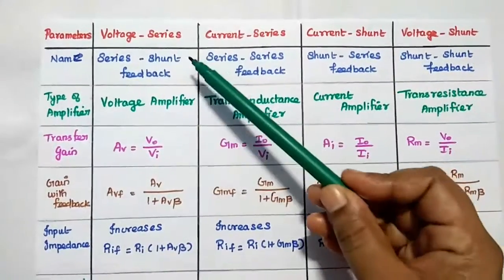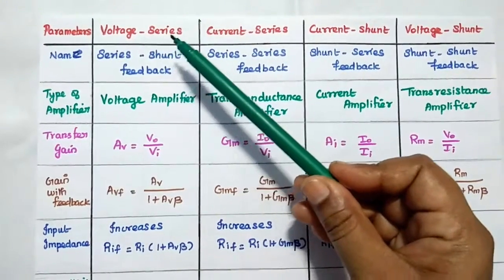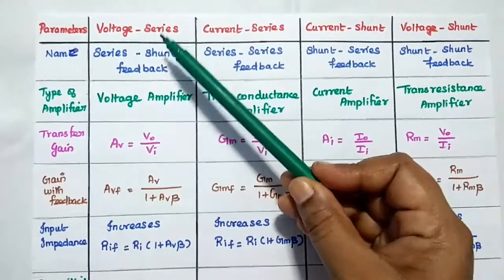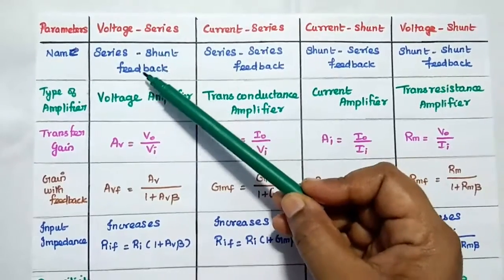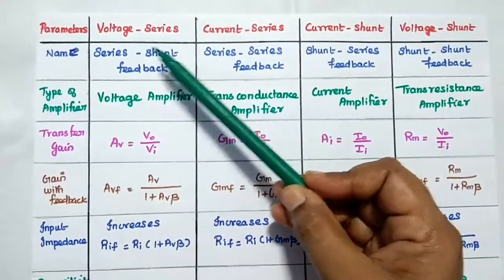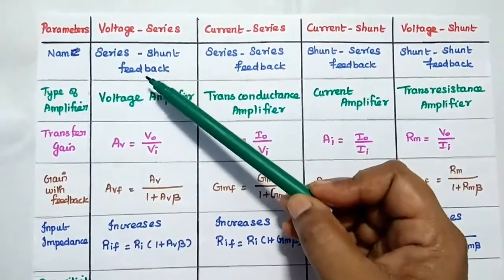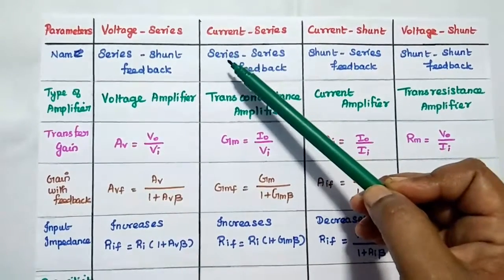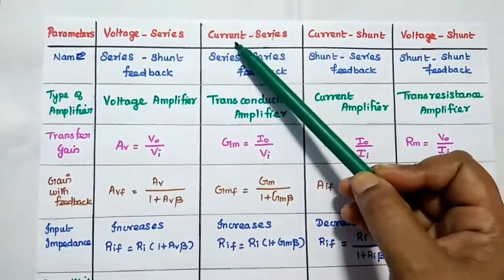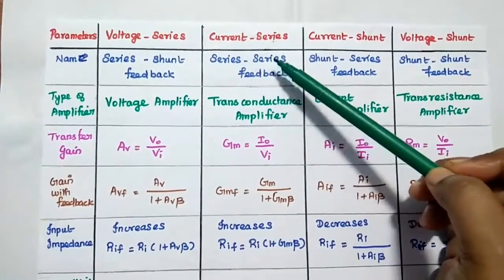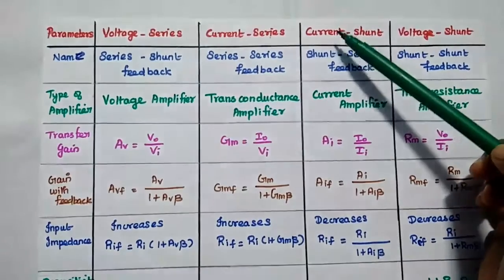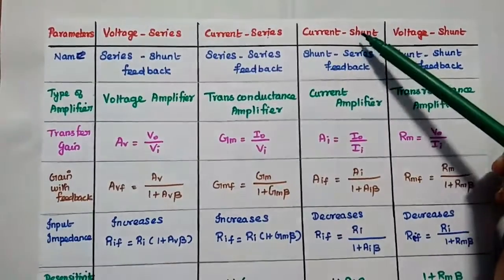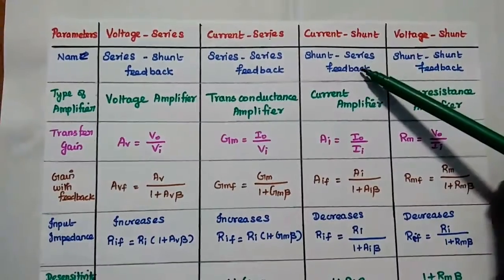Voltage series is also called voltage sampling series mixing, represented as series-shunt feedback — voltage means shunt. Current series is represented as series-series feedback — current means series. Current shunt feedback is represented as shunt-series feedback.